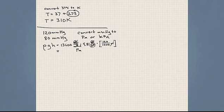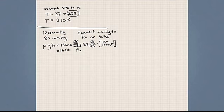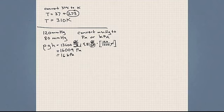A force per unit area is a Pascal. Multiplying out 13,600 times 9.81 times 0.120 gives 16,009 Pascals, or approximately 16 kilopascals. So when someone tells you your blood pressure is 120 millimeters of mercury, you now know that is equivalent to 16 kilopascals.